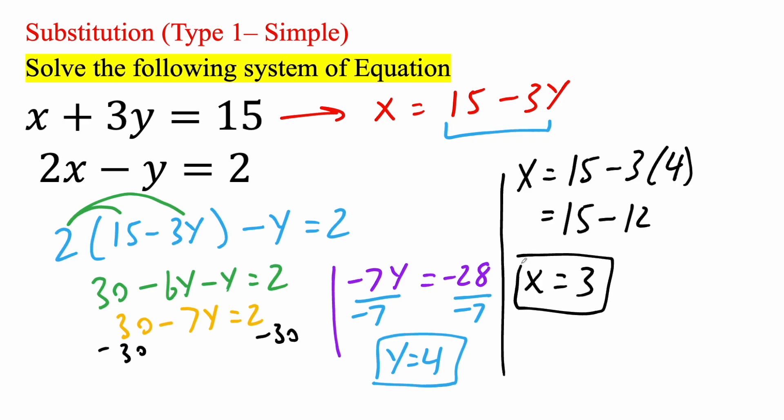So now we know x and y. But it's always a good idea to check. So we said x is 3 and we said y is 4. 3 times 4 is 12, 12 plus 3 is 15. That's correct. We do the second one. 2 times 3 is 6, 6 minus 4 is 2. So that's correct. And so both are correct.